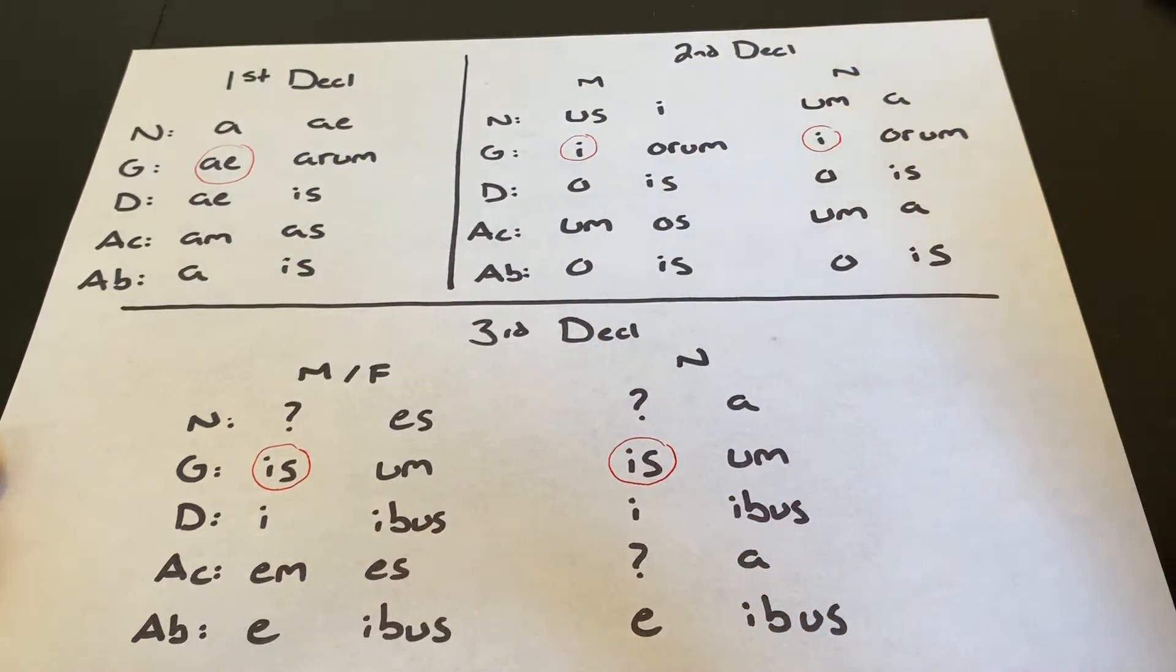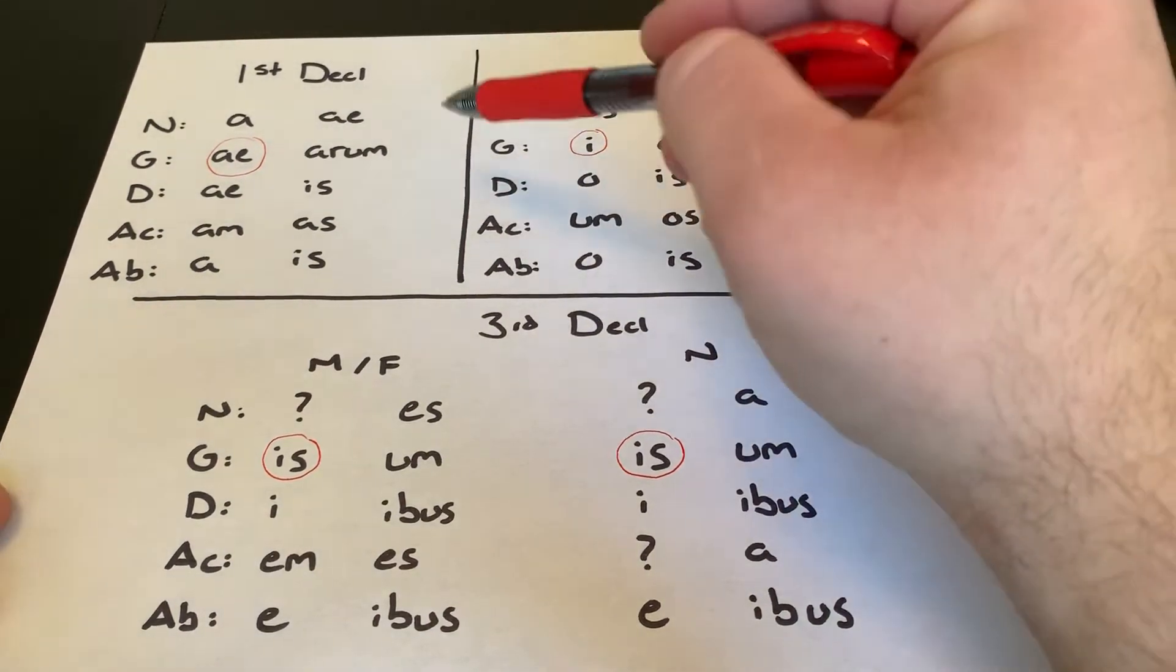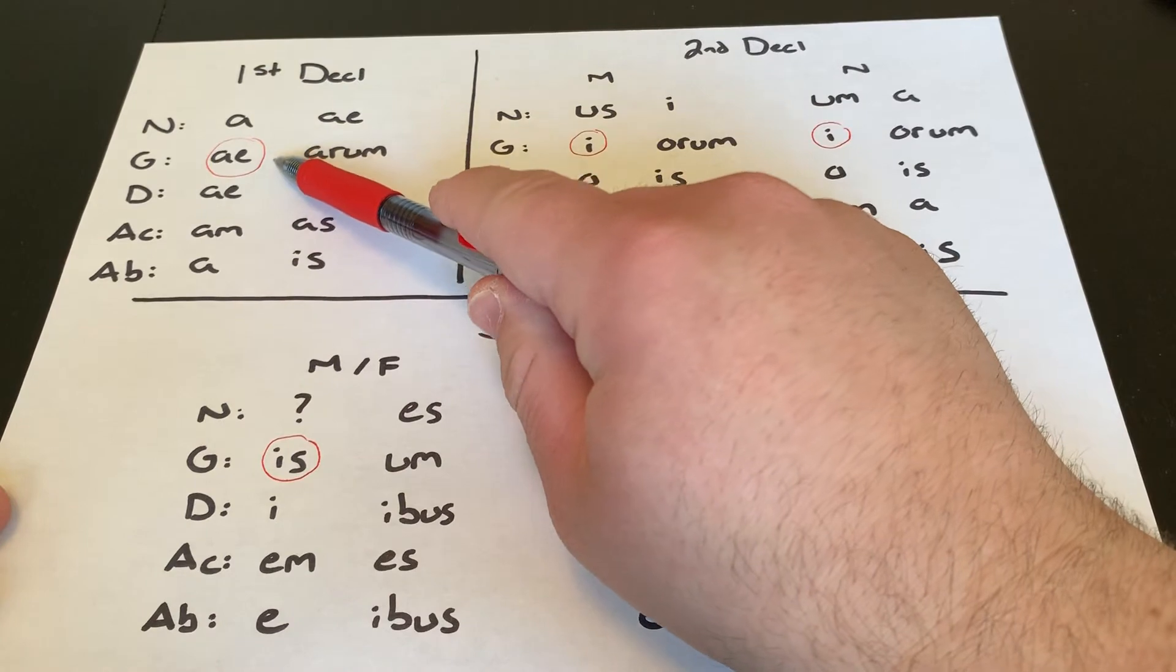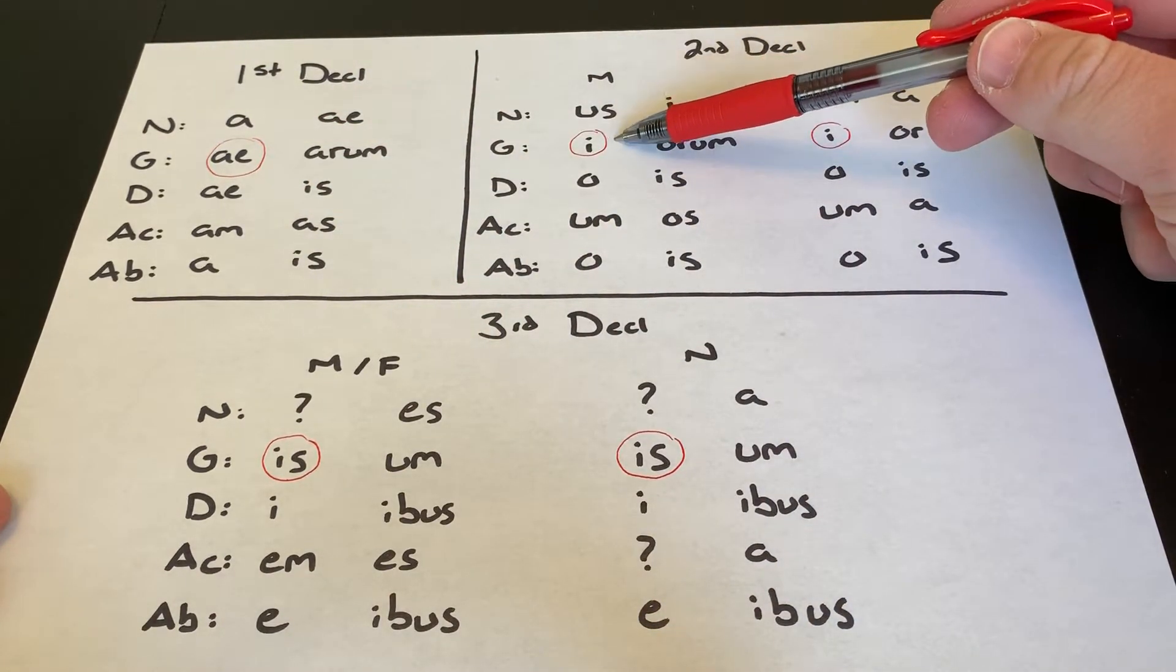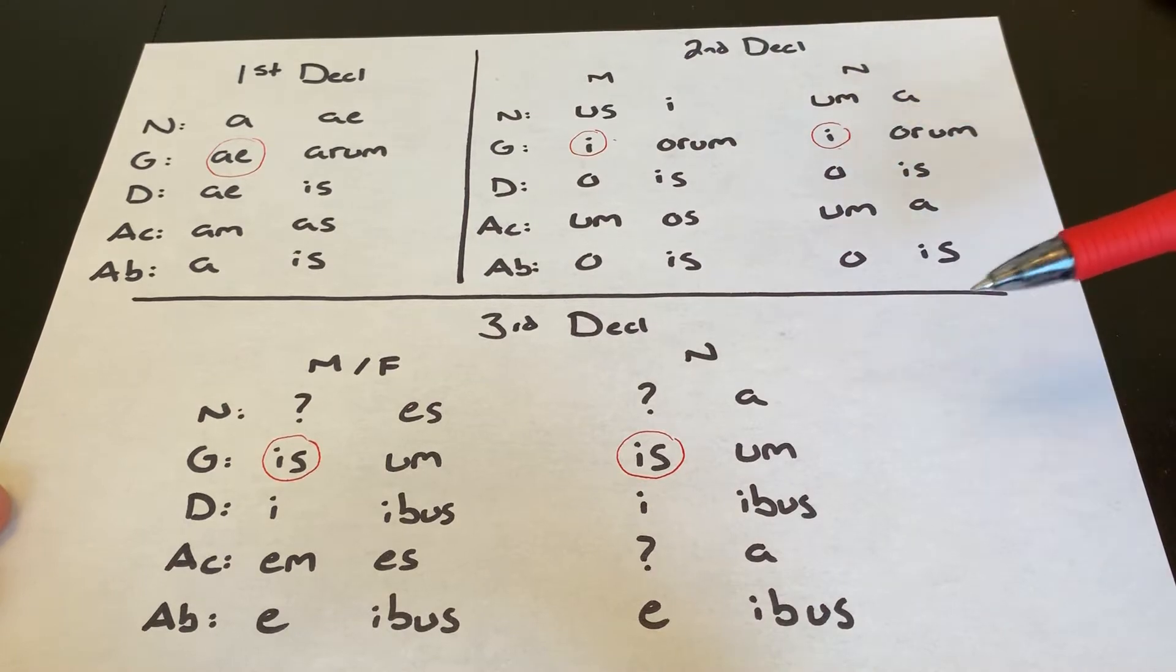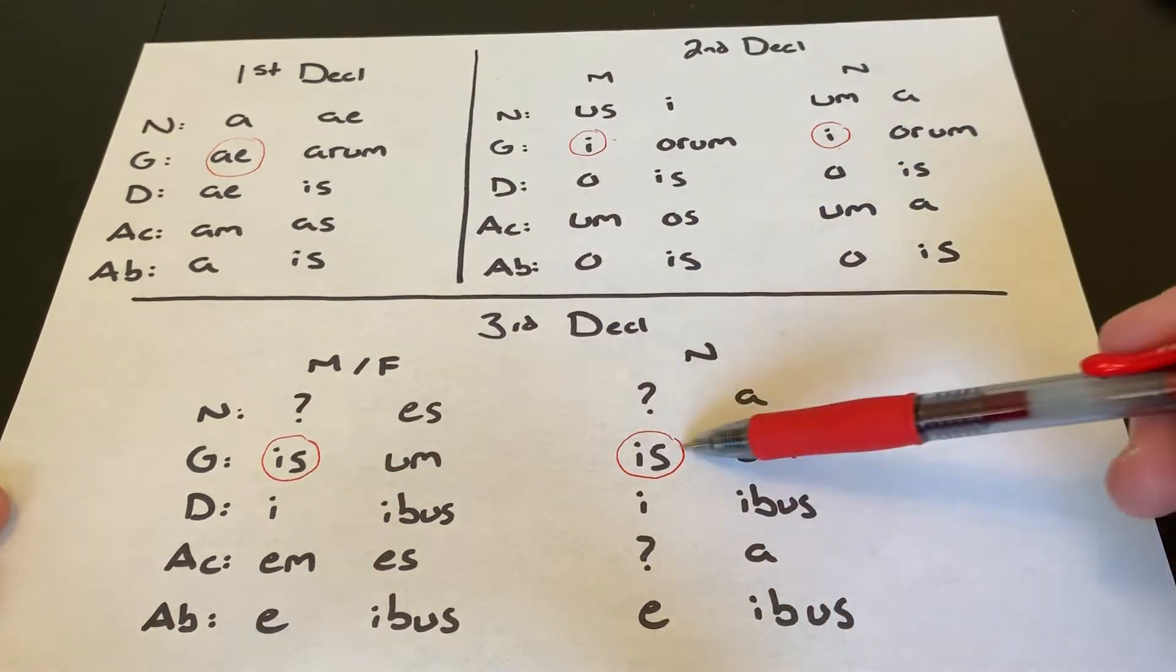And these are going to be consistent forms that will tell us what declension a noun is. So first declension nouns will have their genitive singular as AE, second will have I, and third declension will have IS.